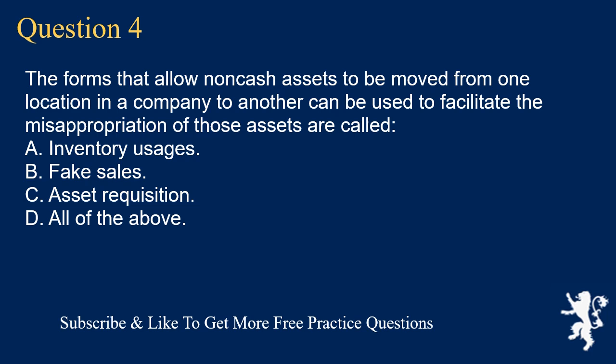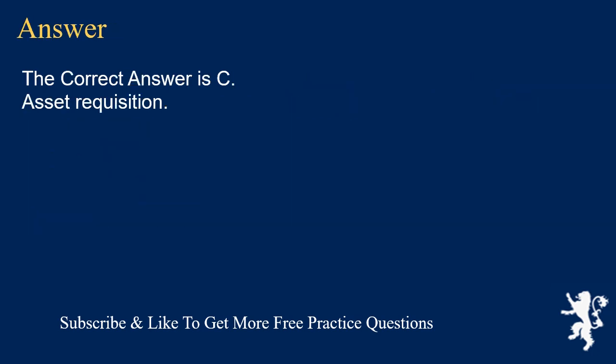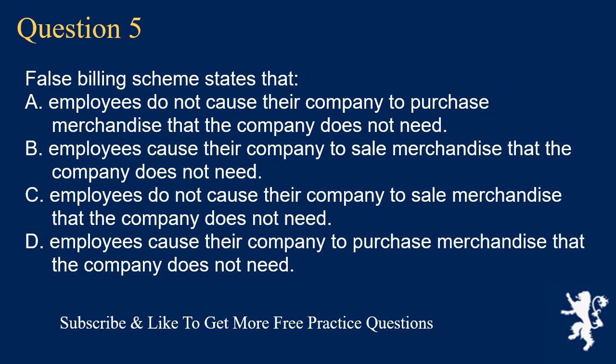Question 4: The forms that allow non-cash assets to be moved from one location in a company to another, which can be used to facilitate the misappropriation of those assets, are called: A. Inventory usages. B. Fake sales. C. Asset requisition. D. All of the above. The correct answer is C. Asset requisition.